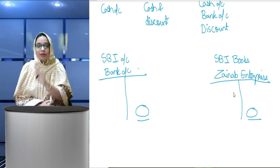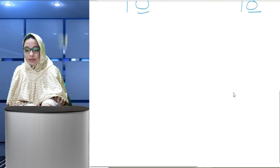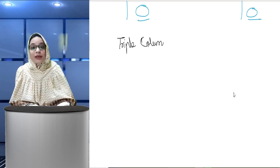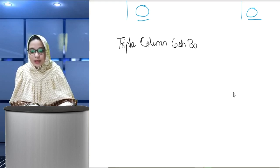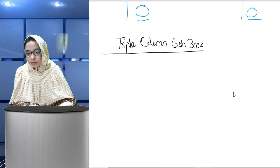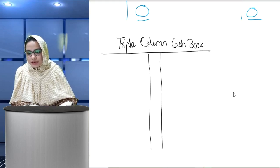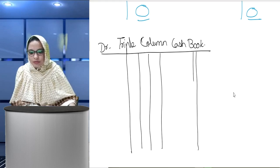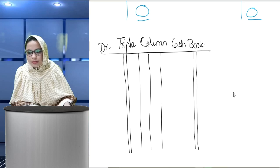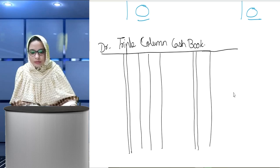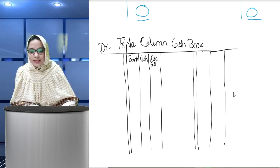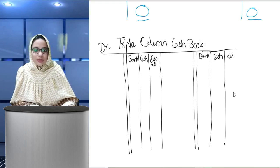Let's understand in more detail. Since we have talked about the bank account being maintained in the triple column cash book, let's draw one. We used to prepare triple column cash book with three columns on the debit side and three on the credit side. The columns are: bank, cash, and discount allowed on the debit side; and bank, cash, and discount received on the credit side.